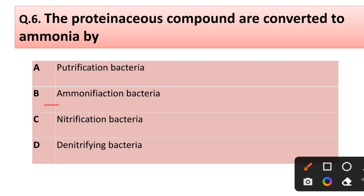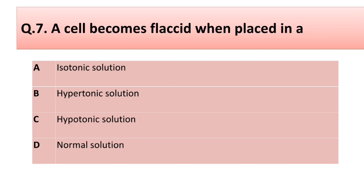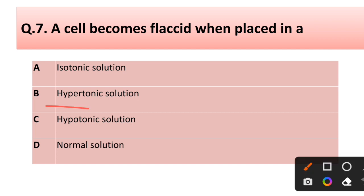Question number seven: a cell becomes flaccid when placed in — options: (a) isotonic solution, (b) hypotonic solution, (c) hypertonic solution, (d) normal solution. Correct answer is option B: hypotonic solution.